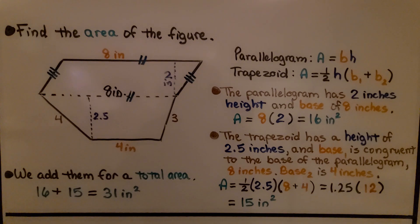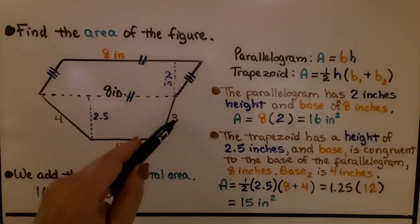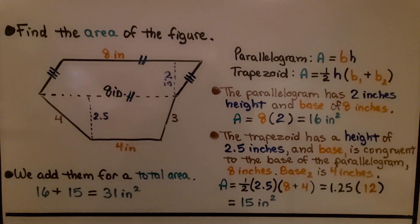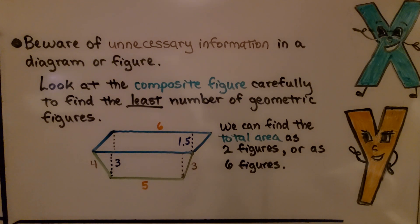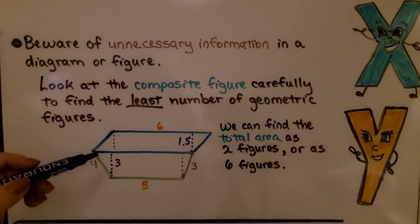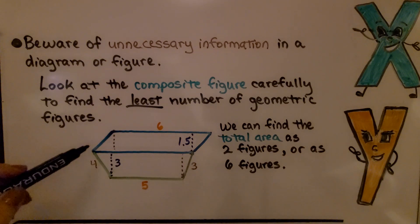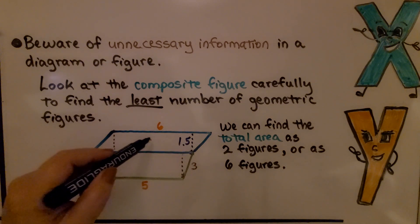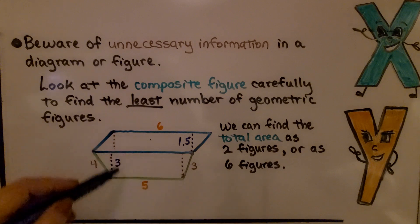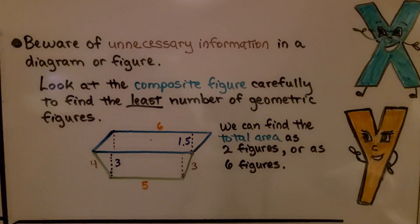Notice that the diagram had measurements of 4 and 3 that we didn't use at all. Beware of unnecessary information in a diagram. Also look at the composite figure carefully to find the least number of geometric figures — we could find the total area as 2 figures (the parallelogram and trapezoid) or needlessly as 6 figures. Use a formula fewer times when possible, and ignore unnecessary information.